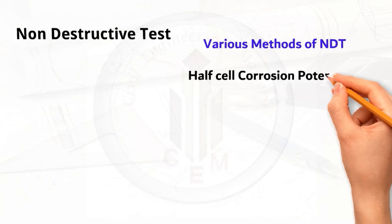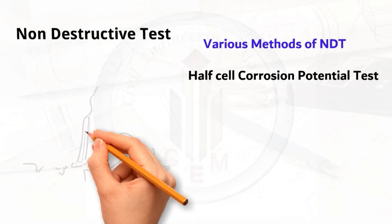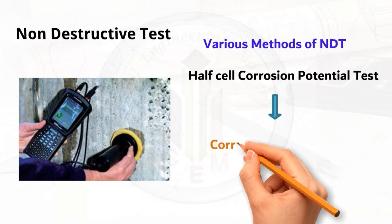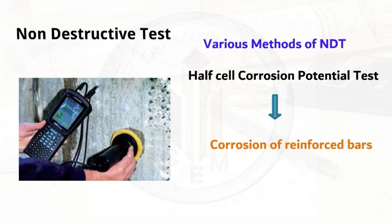The next method is the half-cell corrosion potential test. As the name suggests, this test is used to determine the corrosion of reinforced bars. Since corrosion is one of the major defects in concrete structures, it needs to be assessed properly to avoid severe damage. Various NDT methods are available for this purpose, and the half-cell corrosion potential test is one of them. This method measures the electrical potential between the rebar and the surrounding concrete — a higher potential indicates more active corrosion.